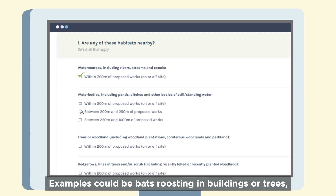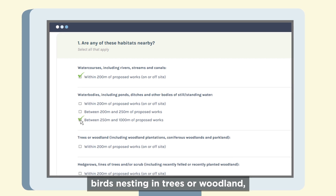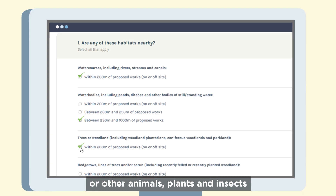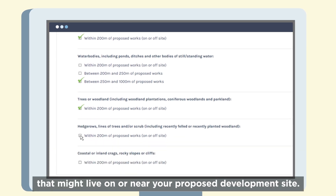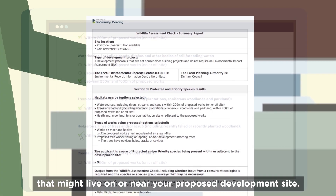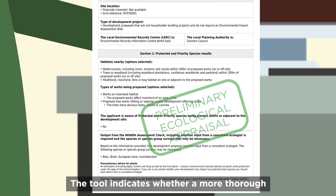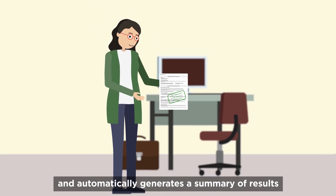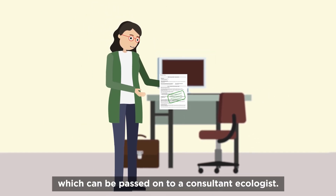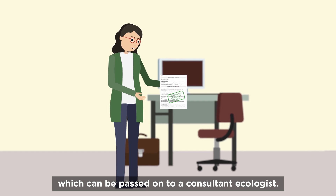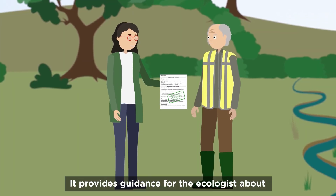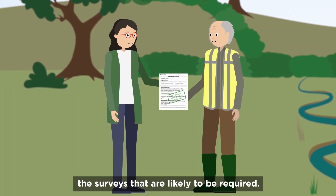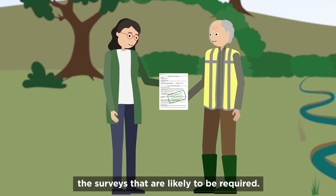Examples could be bats roosting in buildings or trees, birds nesting in trees or woodland, or other animals, plants and insects that might live on or near your proposed development site. The tool indicates whether a more thorough ecological appraisal is required and automatically generates a summary of results which can be passed on to a consultant ecologist. It provides guidance for the ecologist about the surveys that are likely to be required.